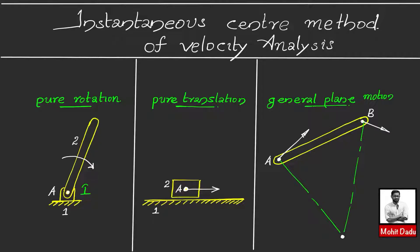A linear path is equivalent to circular motion having an infinite radius of curvature. So for pure translation, you can assume the linear path has a radius of curvature equal to infinity, meaning the instantaneous center lies at infinity. Therefore, the instantaneous center for pure translation will be at infinity. For general plane motion, link AB has combined rotation as well as translation in the plane.